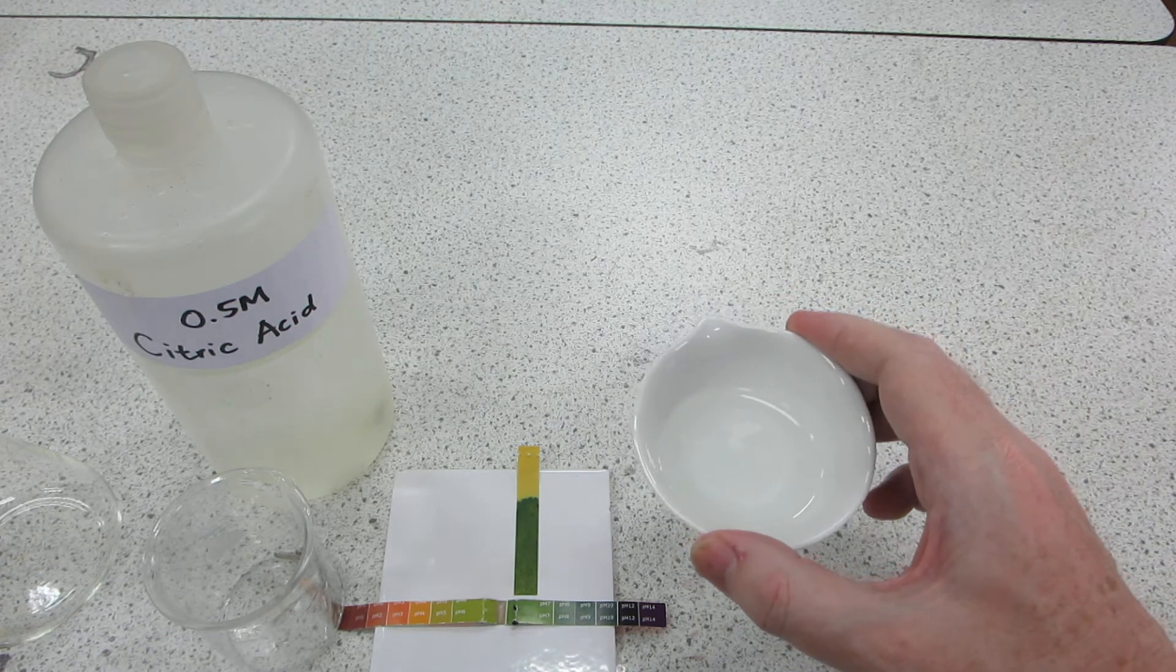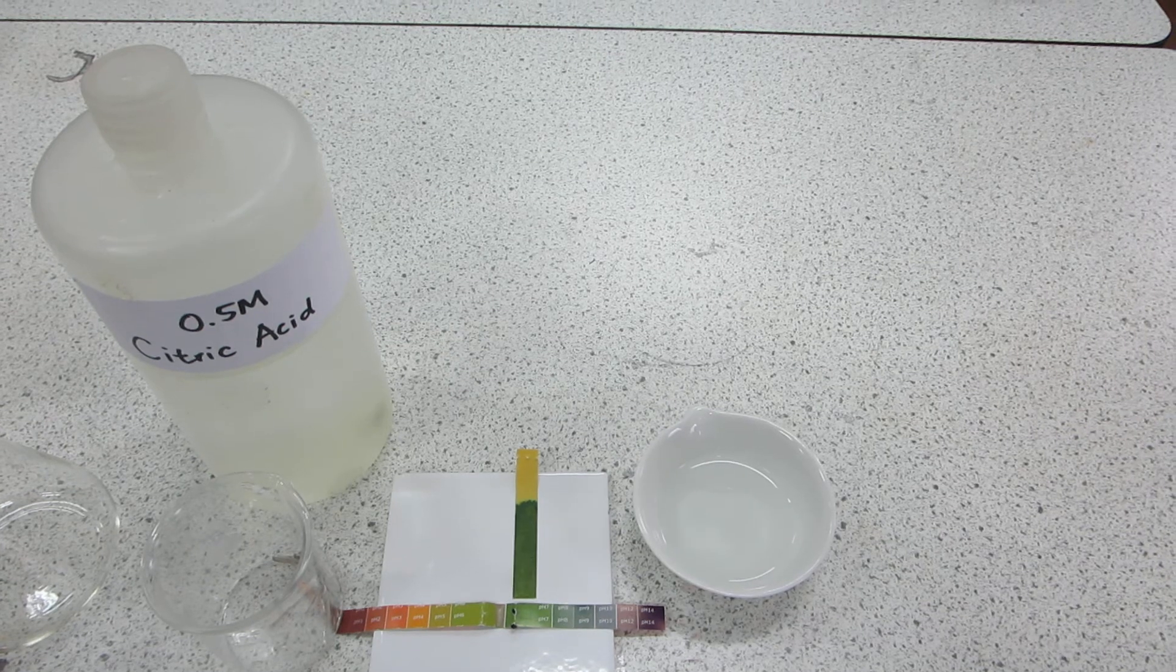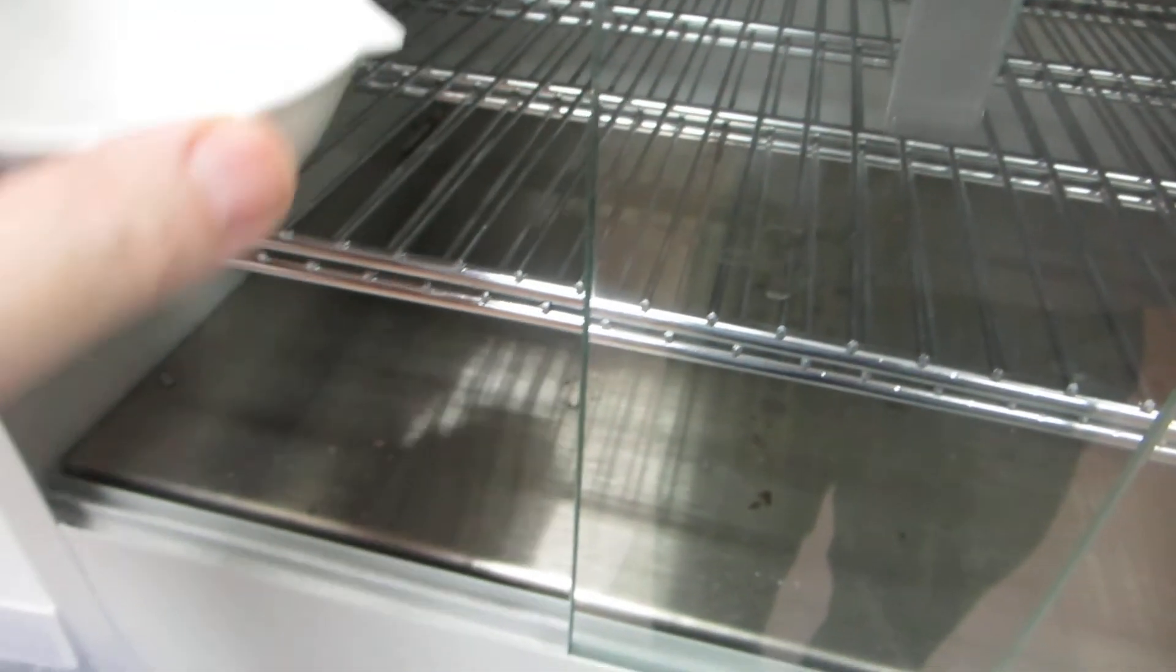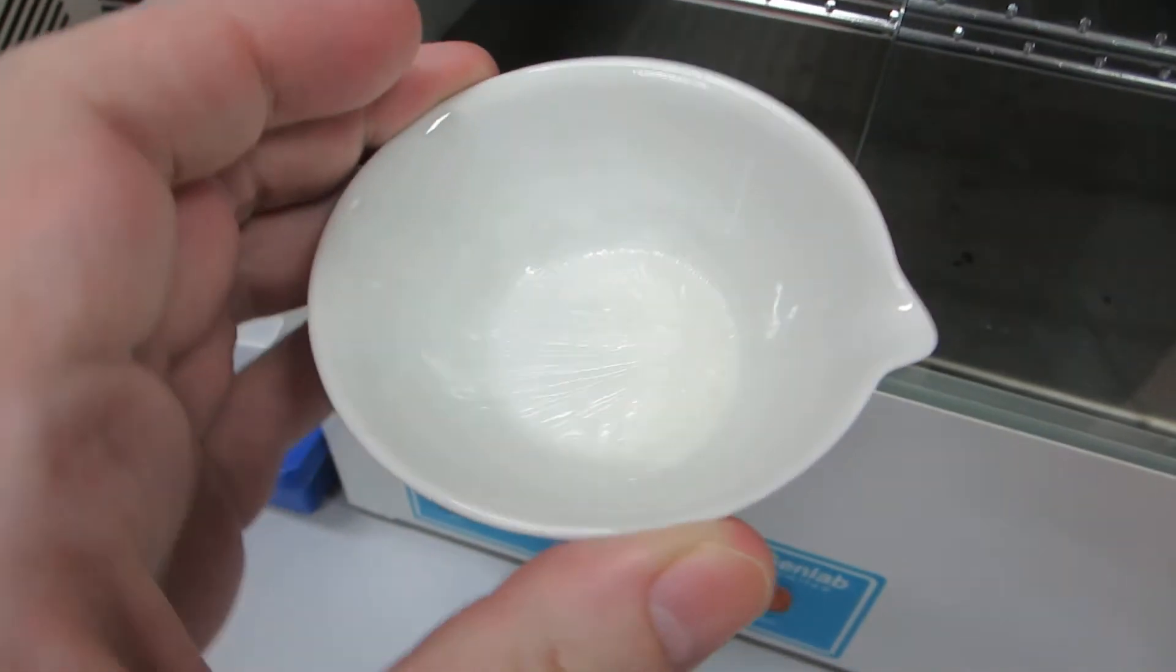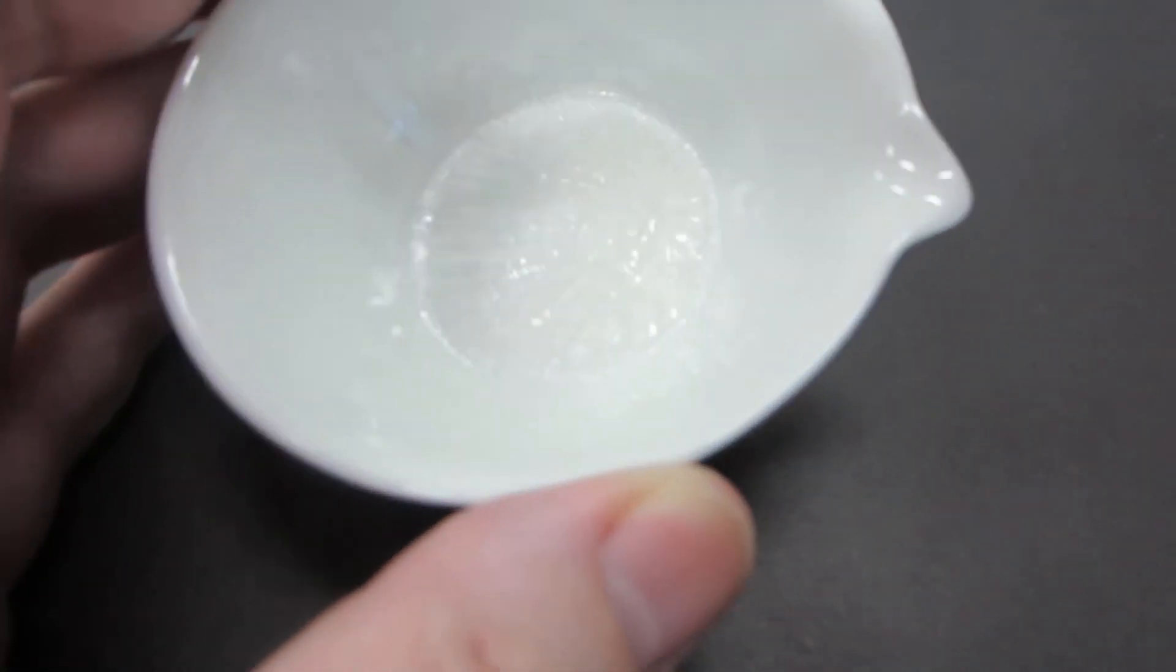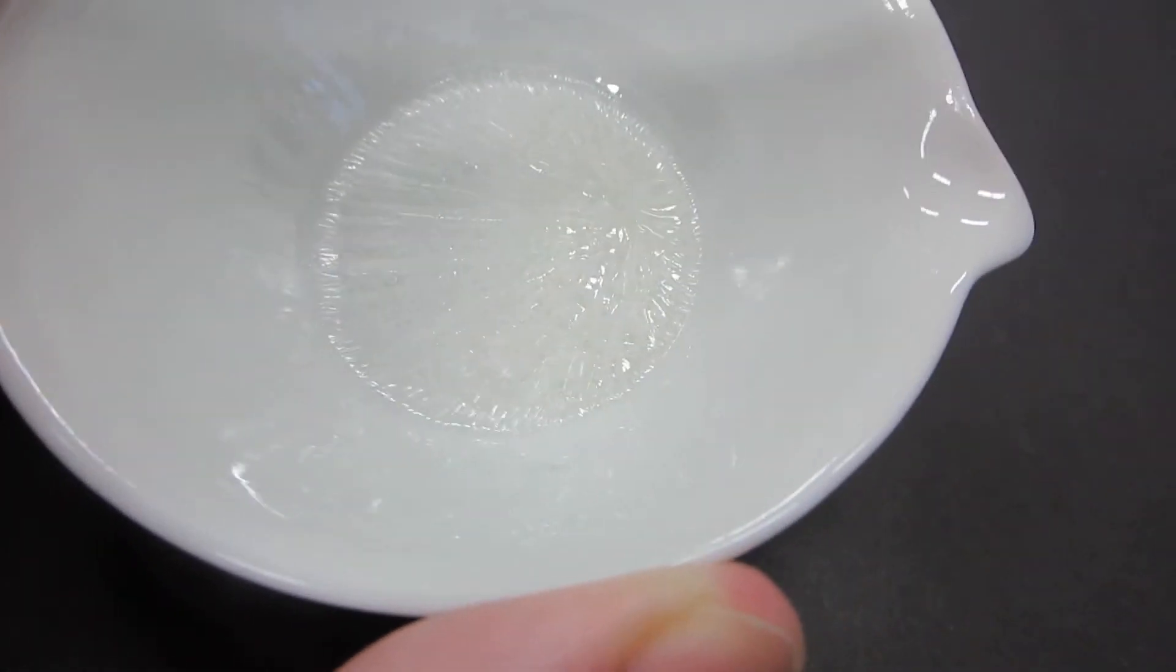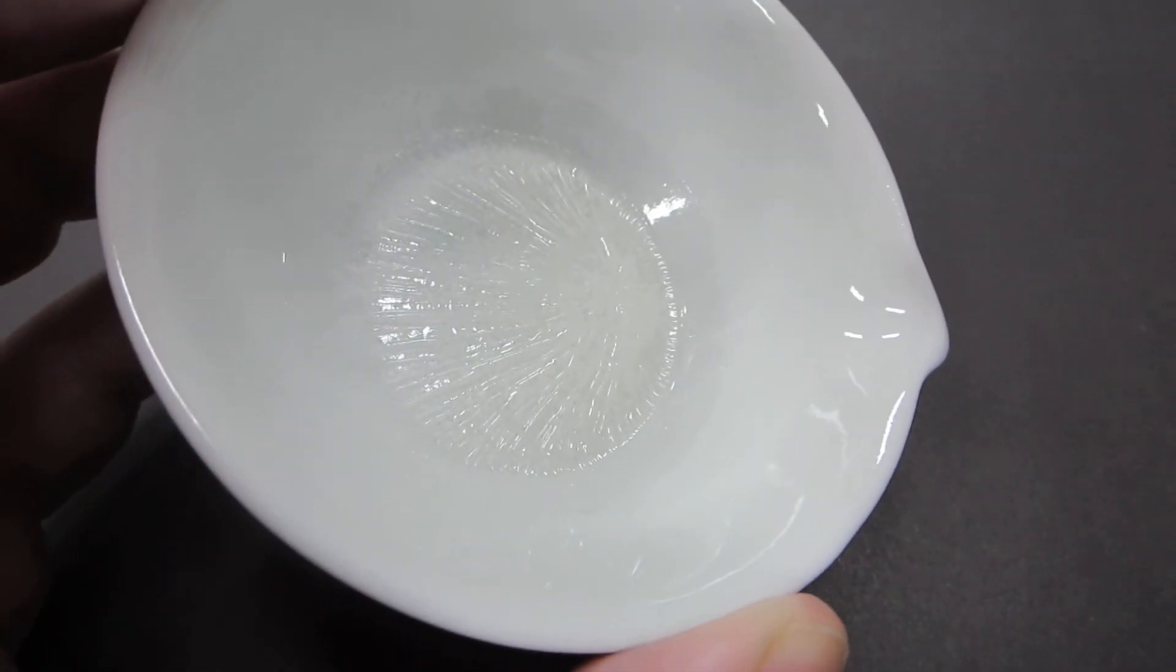And there's the product from the magnesium and citric acid reaction. You can probably see a crystalline surface. What lies underneath that I'm not sure. That's the product.